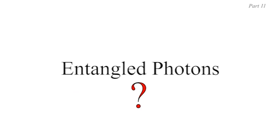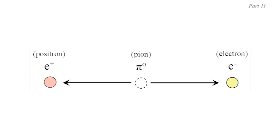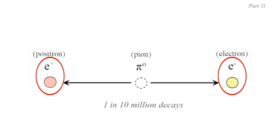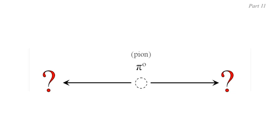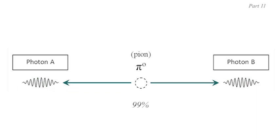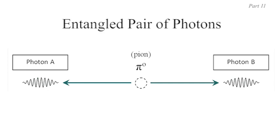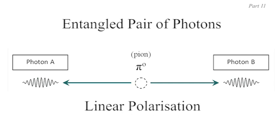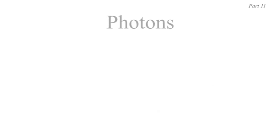What do we mean by entangled photons and how do we get them? One way — though not the way most experiments start — is by the decay of a neutral pion. Less than one in ten million pi zeros decay into an electron-positron pair. Most of them, almost 99%, actually decay into two photons. If the neutral pion is initially at rest, the photons will go off in opposite directions with equal momentum, equal wavelength, equal energy, and they will be an entangled pair.